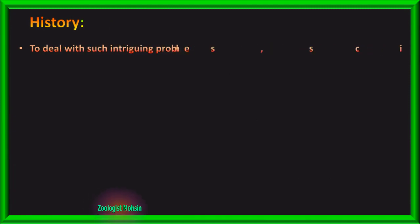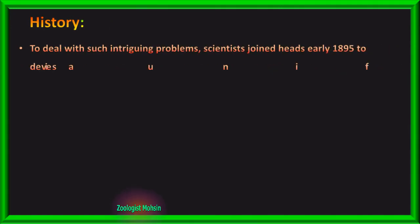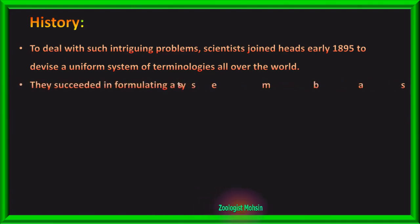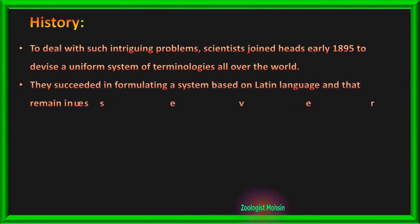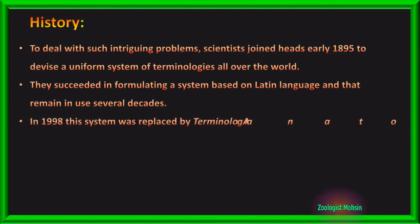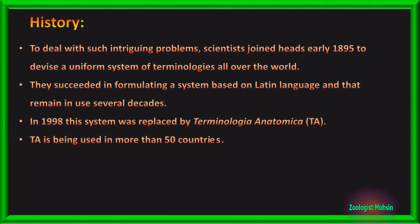To deal with such problems, scientists joined heads early in 1895 to devise a uniform system of terminologies all over the world. They succeeded in formulating a system based on Latin language, which remained in use for several decades until 1998. In 1998, the system was replaced by Terminologia Anatomica, or TA for short, which is being used in more than 50 countries today.